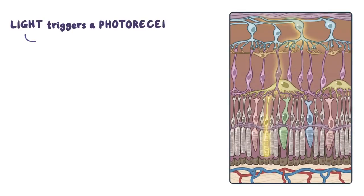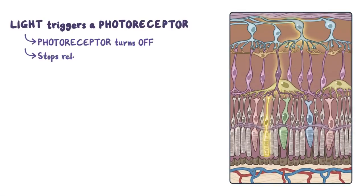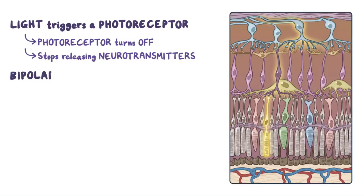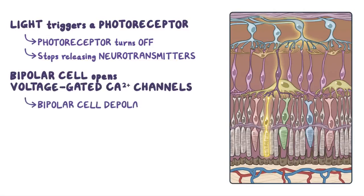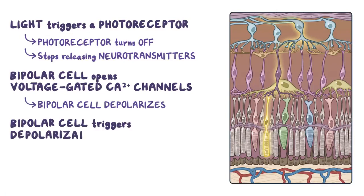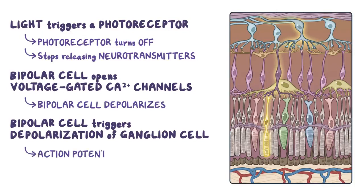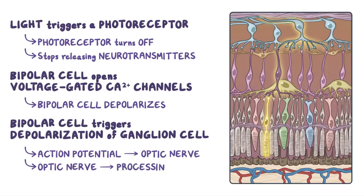So in essence, when light triggers a photoreceptor, it turns off and stops releasing neurotransmitters. Interestingly, it's the lack of glutamate that causes the bipolar cell to open up its voltage-gated calcium channels and depolarize. The bipolar cell then triggers depolarization of the ganglion cell, and from there the action potential is propagated along the optic nerve, and ultimately to the primary processing centers in the brain in the occipital lobe.